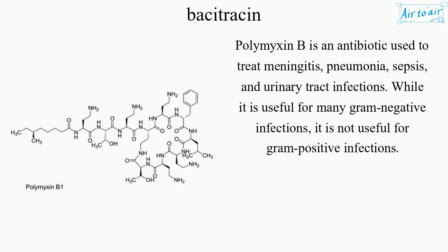Polymyxin B is an antibiotic used to treat meningitis, pneumonia, sepsis, and urinary tract infections. While it is useful for many gram-negative infections, it is not useful for gram-positive infections.